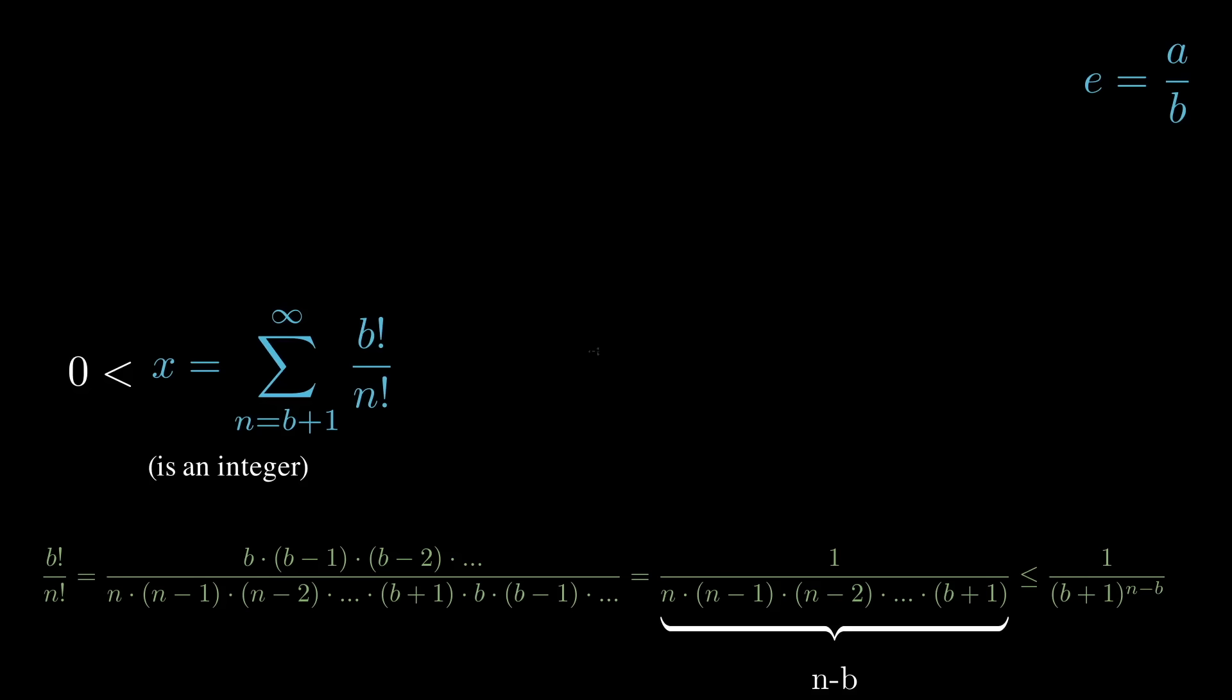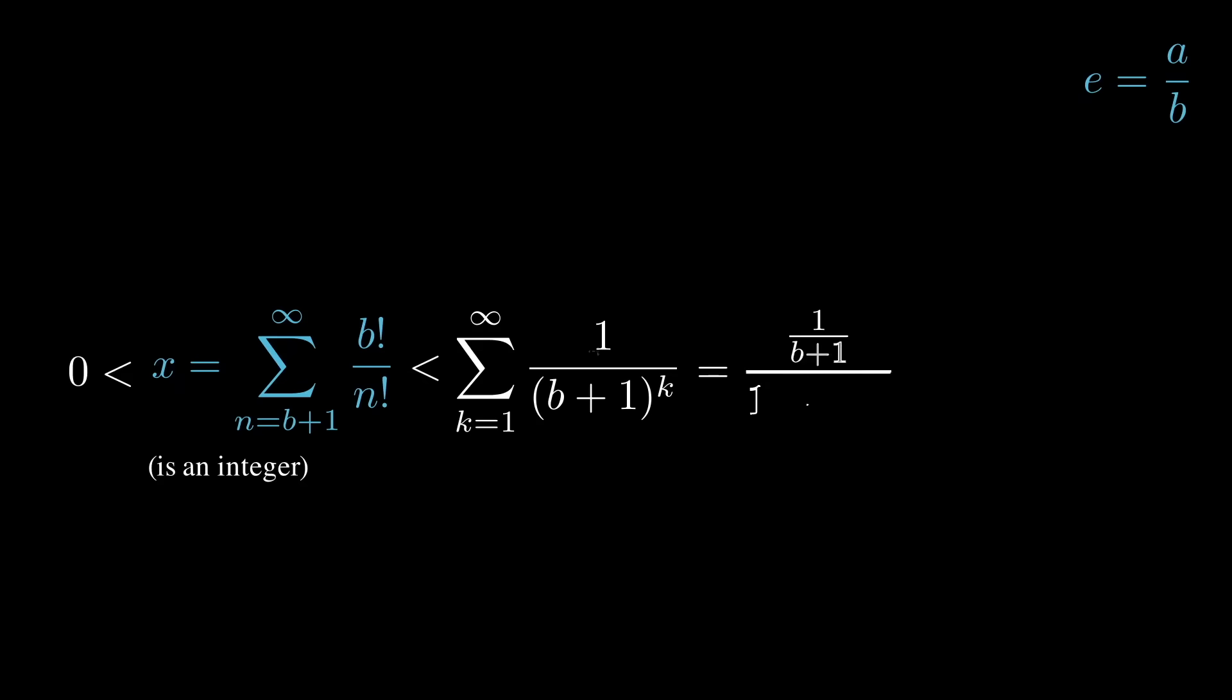Here's the most fun part. We have this representation of this sum now. We can re-index it to make it look a little nicer, like a geometric series. We know the sum of a geometric series, the first term divided by 1 minus the ratio. This simplifies to 1 over b.